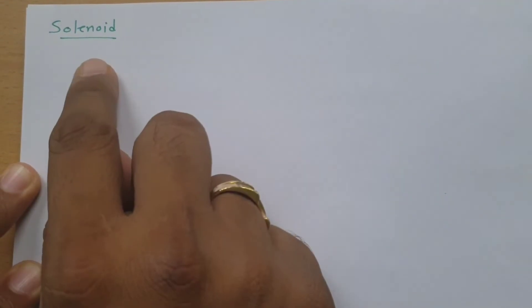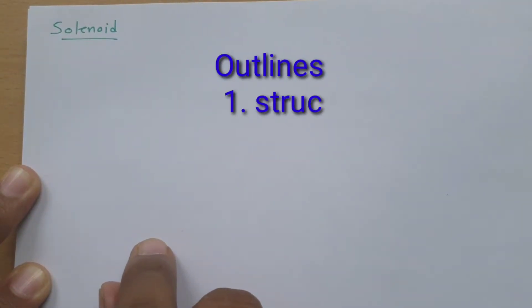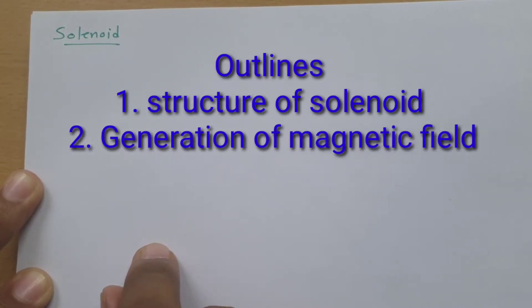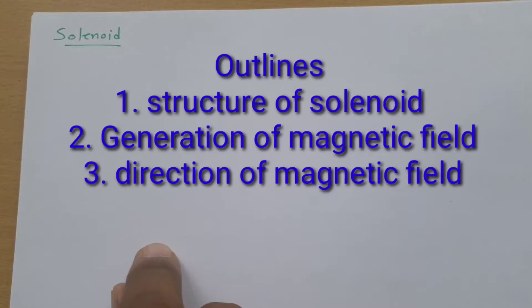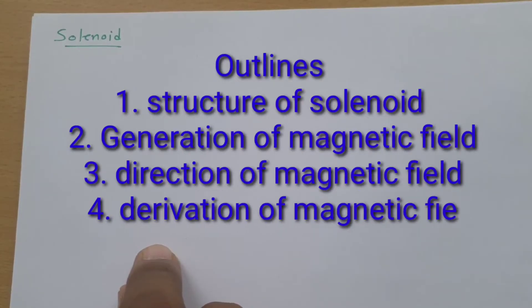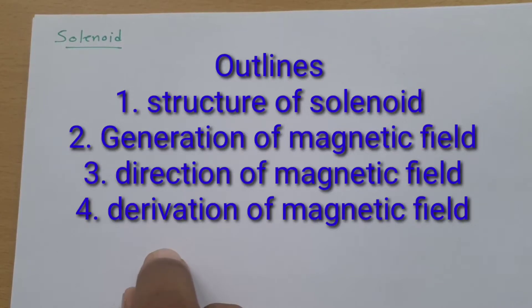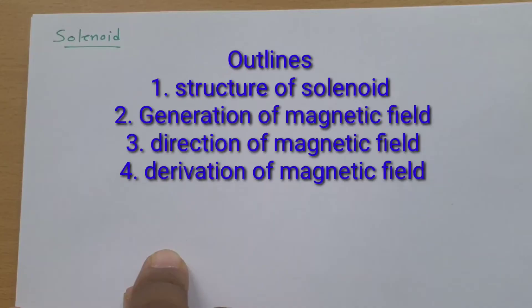Welcome to the Electromagnetics Playlist. I, Professor Hitesh Dholakya, am going to explain solenoid in this session. To understand this session, first I will explain the structure of the solenoid, then how there will be a generation of magnetic field, then the direction of magnetic field as per the right hand thumb rule, and finally how we can calculate the magnetic field because of a solenoid.